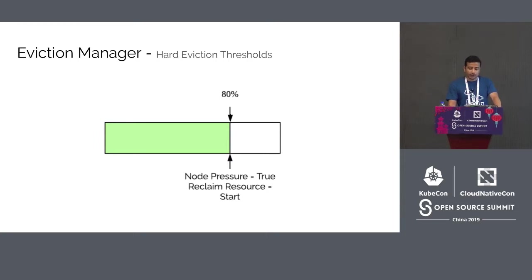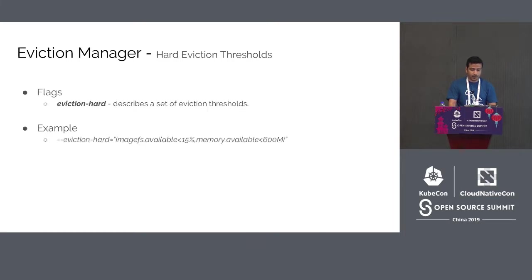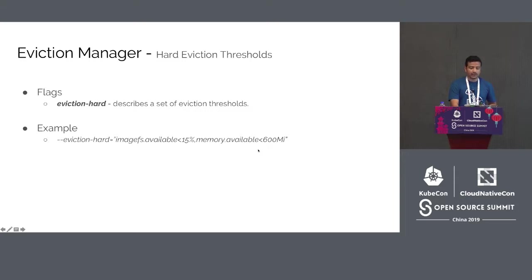Hard eviction thresholds have no grace period. If observed, Kubelet will take immediate action to reclaim the associated starved resource. If a hard eviction threshold is met, Kubelet kills the pods marked for eviction immediately with no graceful termination. The moment resource utilization crosses the configured value — for example 80% — Kubelet reports node pressure and initiates the reclaim process. Hard evictions are defined as a collection of resource thresholds under the eviction-hard flag, such as imageFS and memory thresholds. This triggers when available disk space falls below 15% or available memory falls below 600 MB.